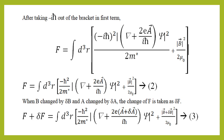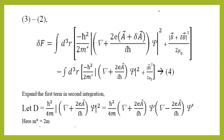So when B is changed by delta B and A is changed by delta A, the free energy F changes by delta F, as given in equation number three. We replace B by B plus delta B and A by A plus delta A in equation number two. Substituting into equation number three, we can obtain equation four. Here delta F is the change of the free energy, and there is a minus sign in the second term.